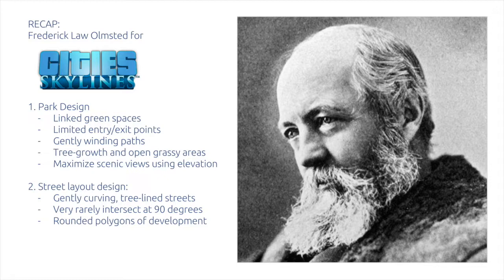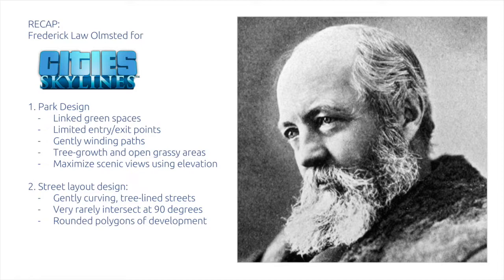Second, street layout and design: utilize gently curving tree-lined streets that rarely intersect at 90 degrees, creating rounded polygons of development. Looking especially at the Riverside plan, you see rounded ovals with plots for development inside. The idea is to have those gently curving traffic-calming streets around residential development areas. I hope you've enjoyed this look into Frederick Law Olmstead. Please drop me a comment or find me on the Facebook Mayor's Guild page and let me know how your application of his ideas turned out. I'll have another planner in a couple weeks — thanks, my name is Ferris, take care of each other, bye-bye.